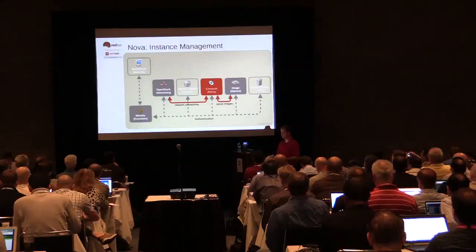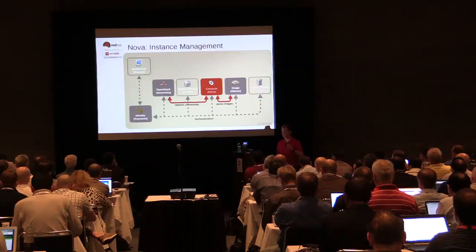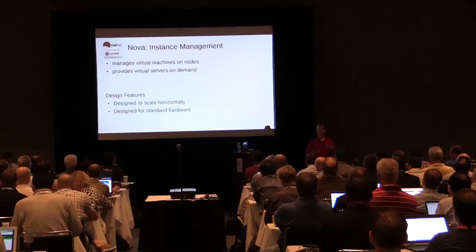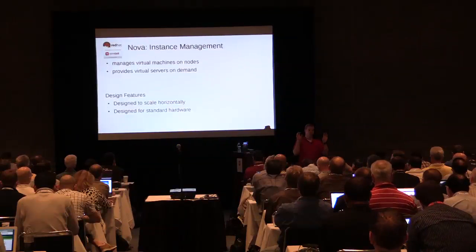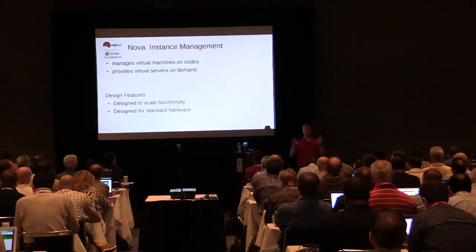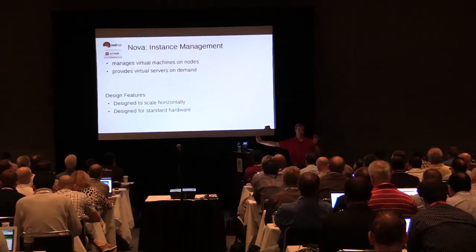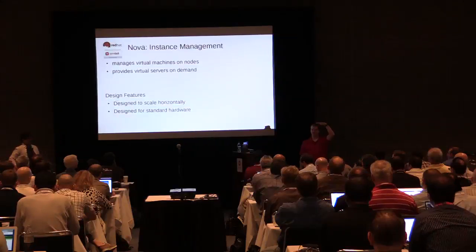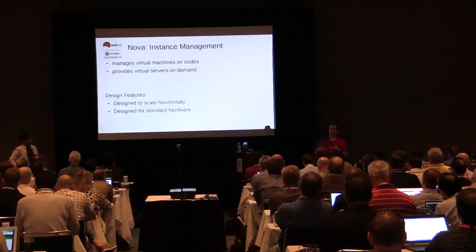We've got a network, a router, and therefore the networking for an instance. Let's get into Nova and look at instance management. Nova knows about all the compute nodes and has scheduling to make an educated decision on where to place your instance. It's designed to scale horizontally — with my single controller and single compute node architecture, I could add more compute nodes: three, four, ten, however many.